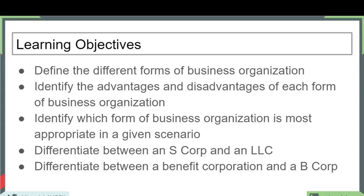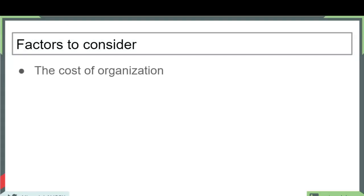Here are the learning objectives for this chapter. I want to remind you that these videos are intended to highlight the concepts from the textbook — it is not a replacement of the textbook. Let's take a look at the different forms of business organization and some of the factors that we want to consider when we are choosing amongst them. One is the cost and the other is the reporting requirements. The textbook describes this in more detail and also highlights the importance of the differences between different states, so you may also want to take into account which state you want to form your business in.